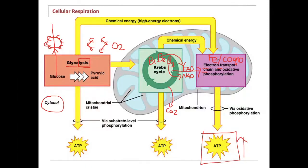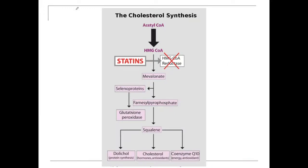The Krebs cycle and the electron transport chain both take place in the mitochondria. The Krebs cycle takes place first — you need B vitamins so it can produce the coenzymes FAD and NAD, which are needed for the electron transport chain to produce energy. That's why you need your B vitamins: not so much for the Krebs cycle to make energy itself, but to produce the coenzymes needed by the electron transport chain to make ATP. In the next video, I'm going to show you why CoQ10 issues can create a lot of fatigue, muscle aches, myalgias or fibromyalgia, and dementia or cognitive impairment. Hang on tight.